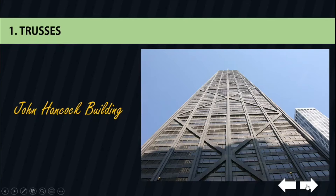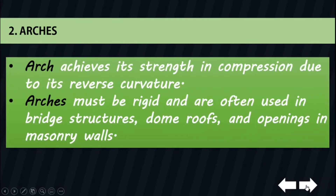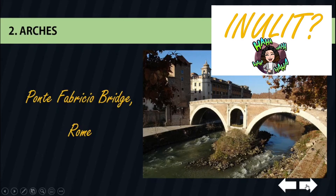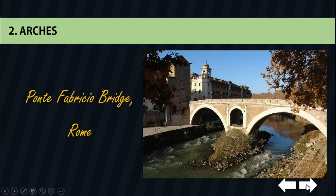Number two is arcs. An arc achieves its strength in compression due to its reverse curvature. Arcs must be rigid and are often used in bridge structures, dome roofs, and openings in masonry walls. Our first example is the Ponte Fabricio bridge. The Romans were pioneers in the use of arcs for bridges, buildings, and aqueducts. This bridge spans between the bank of the River Tiber and Tiber Island. It was built in 64 BC.